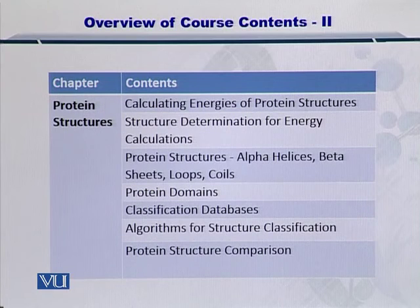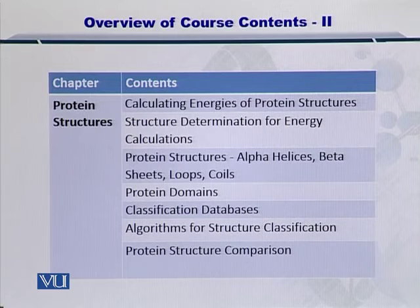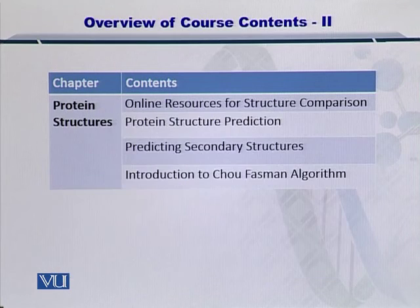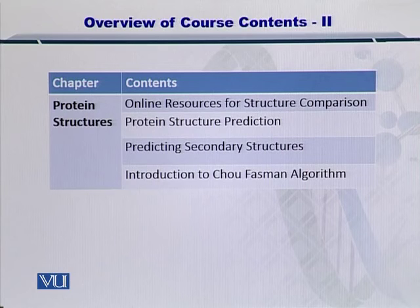After calculating the energies of protein structures, we'll see how structure determination can be done by looking at these energy levels. Protein structures such as alpha helices, beta sheets, loops, and coils will be defined, and we'll see how they come together towards creating motifs and domains. We'll also look at the classification databases and algorithms for classifying proteins into these categories, and then move to online tools and resources for structure comparison.